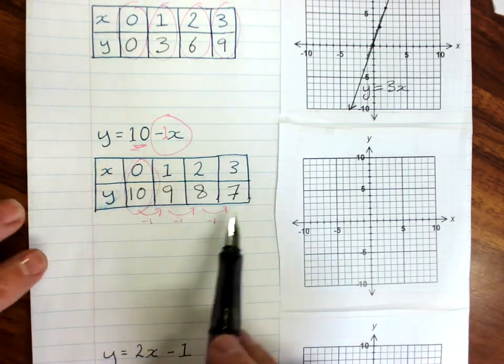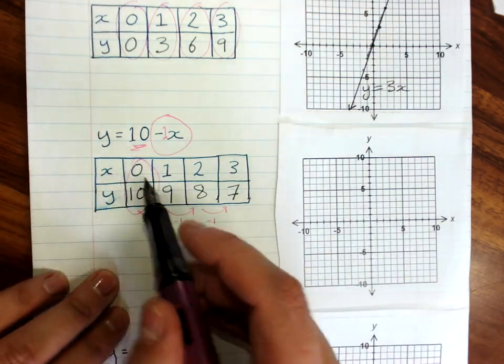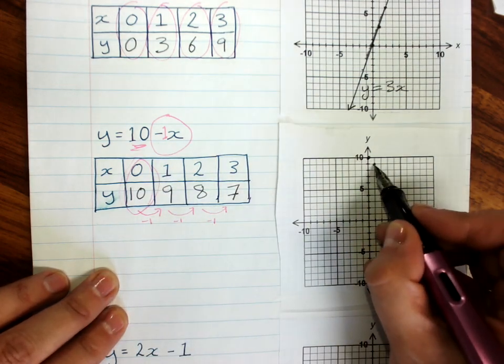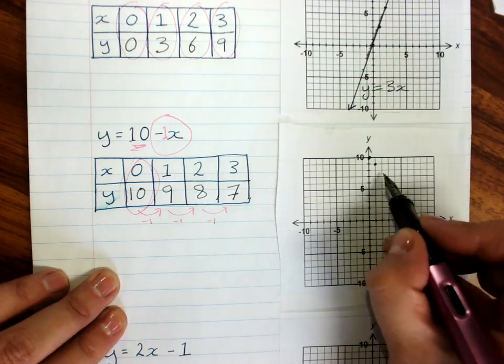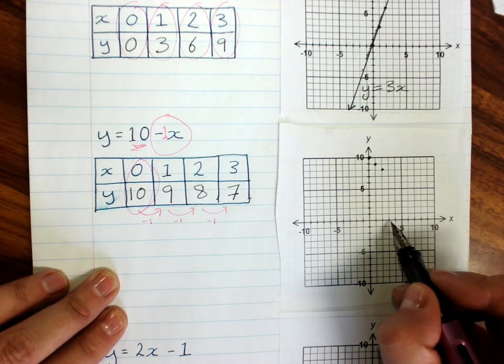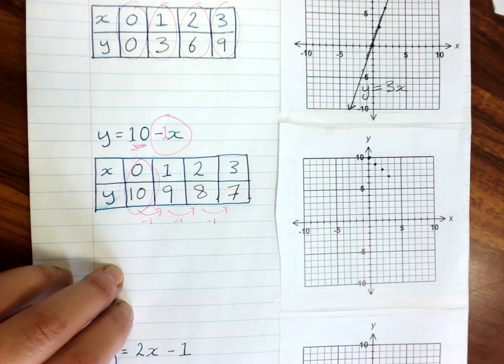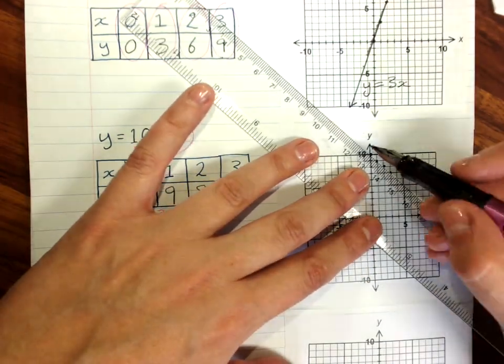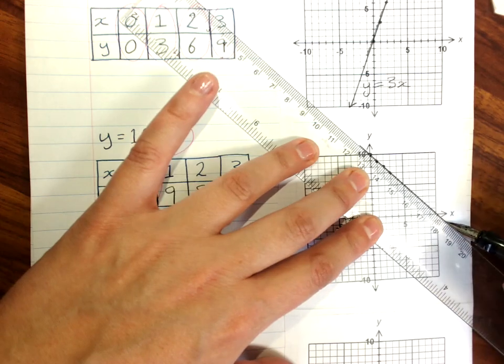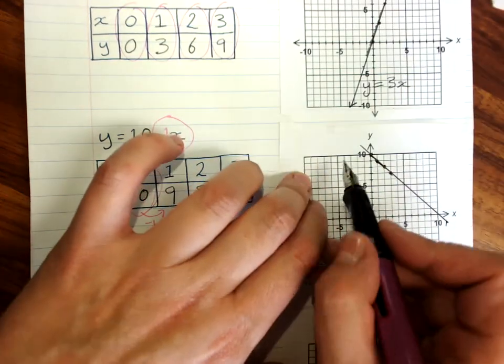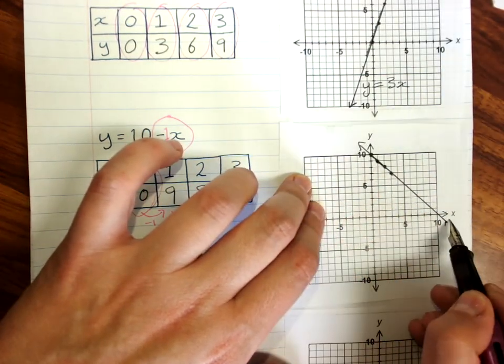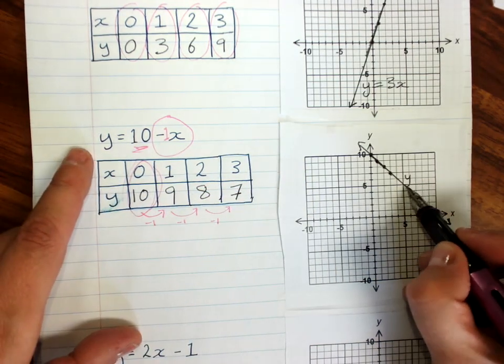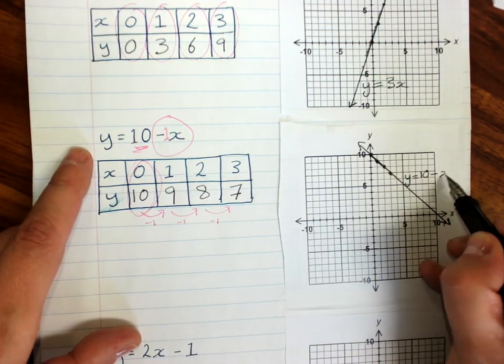Do your table, plot your points, 0, 10, 1, 9, 2, 8, and 3, 7. Draw a line straight through it, taking up as much of the table as you can, sorry, the graph as you can. Arrow at either end, and then next to it you write the rule, y equals 10 minus x.